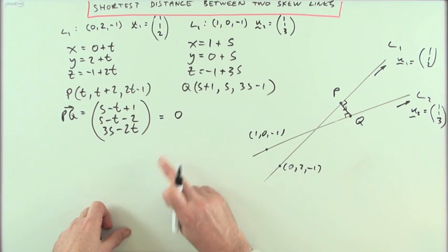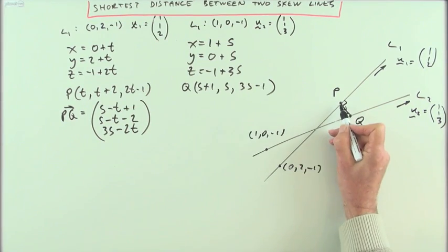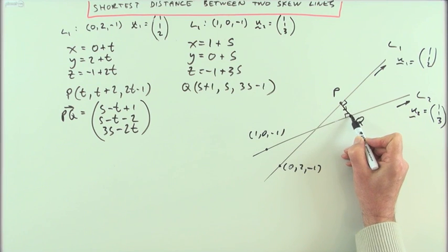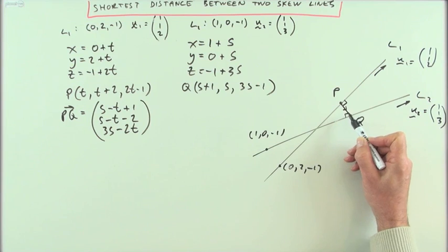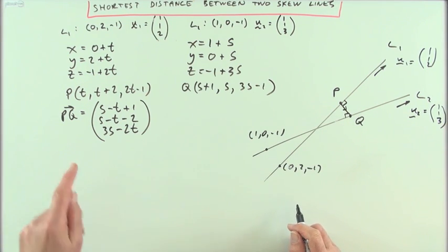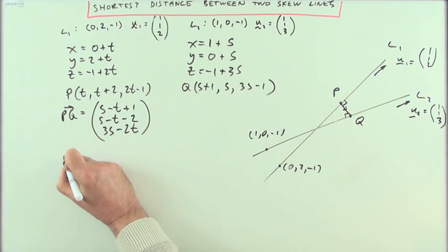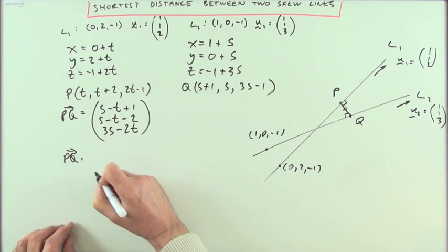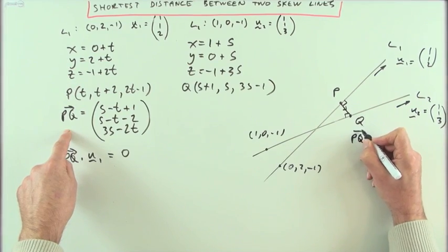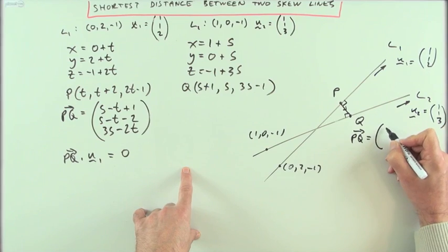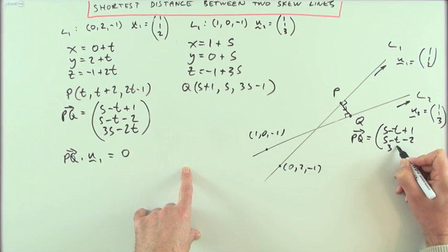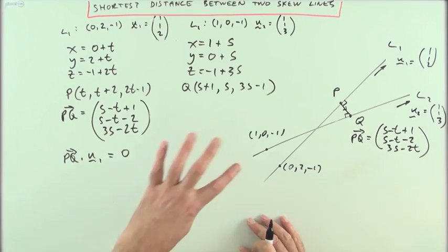I'm not trying to find the point of intersection — I want the shortest distance PQ. The way to do that is to find a pair of points where PQ is perpendicular to both lines simultaneously. So PQ dot U1 must equal zero, and I'll note the vector PQ: (S - T + 1), (S - T - 2), (3S - 2T), while clearing space to work.